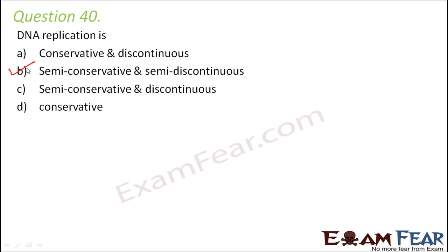Semi-discontinuous — just to give a quick recap: when you look at the way replication of DNA happens in the lagging strand and the leading strand, you see that in one of the strands it's continuous, the other strand it's discontinuous, and that's how we call it a semi-discontinuous replication.